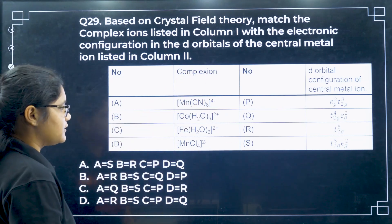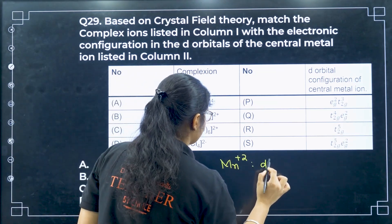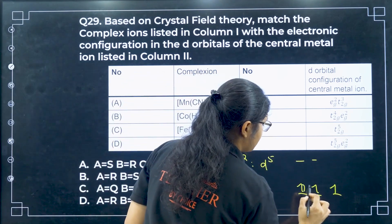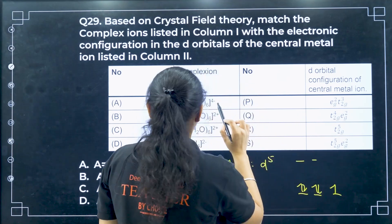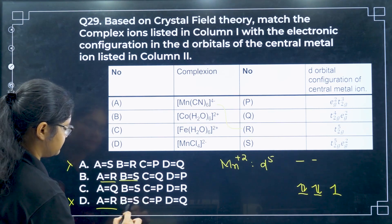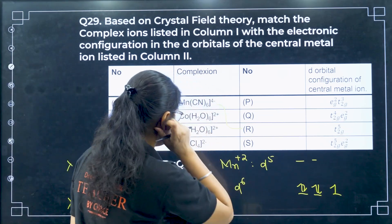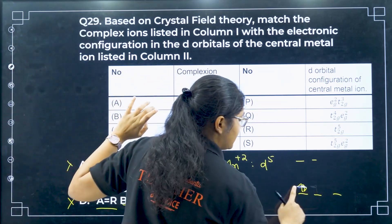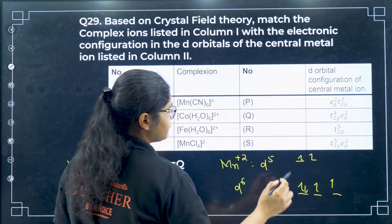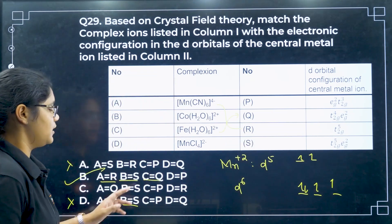Question 29: D orbital configurations are given — match them. For A, Mn2+ with a strong field ligand gives 3d5 with all electrons in T2G — T2G5, so A matches R. For C, Fe2+ (3d6) with a weak field ligand: no pairing gives T2G4 EG2, so C matches Q. Therefore option B is correct.